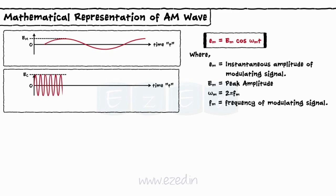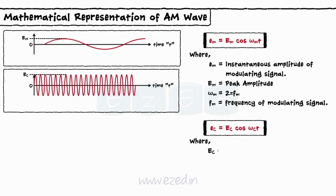Similarly, the carrier signal is given by equation small EC equals cos omega c into t, where EC equals peak carrier amplitude and fc equals carrier frequency.